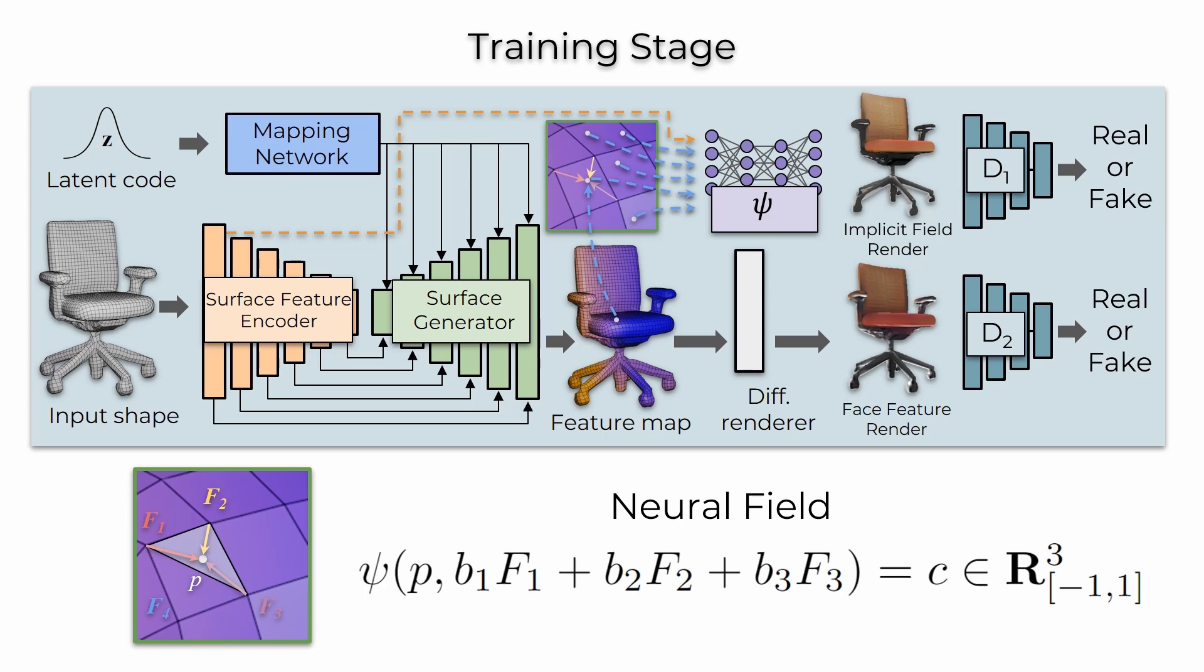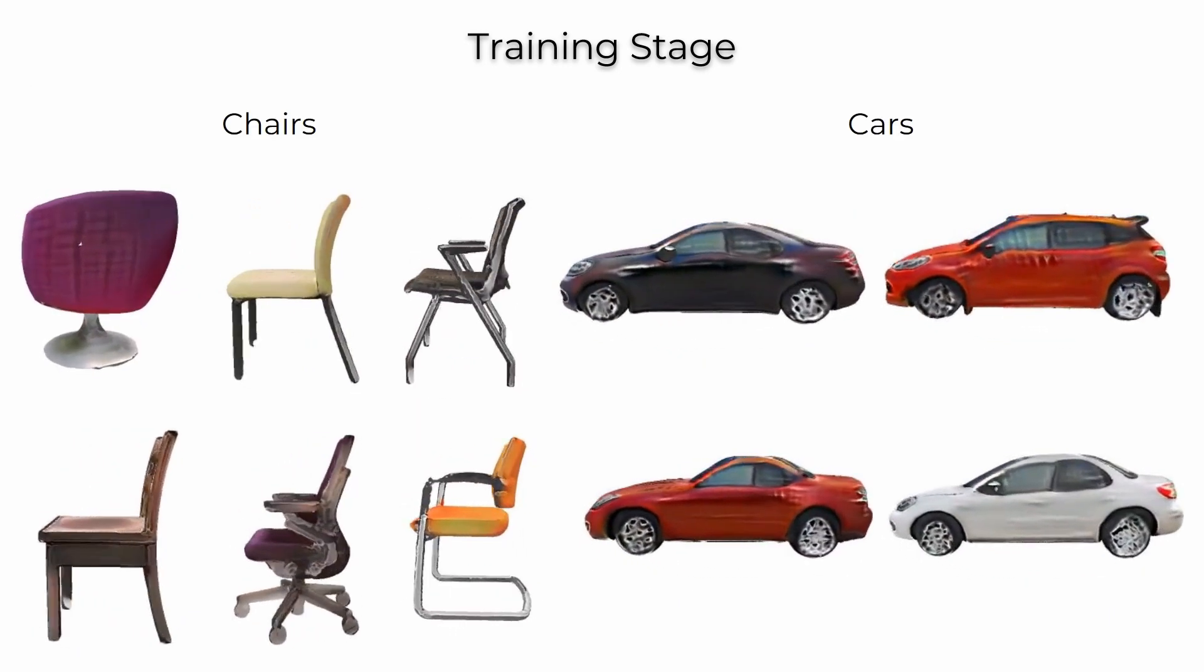Texturing is then learned in an adversarial fashion from photorealistic 2D images, on both output neural field colors and with a proxy loss on the coarse face colors. This enables high-fidelity texture generation.